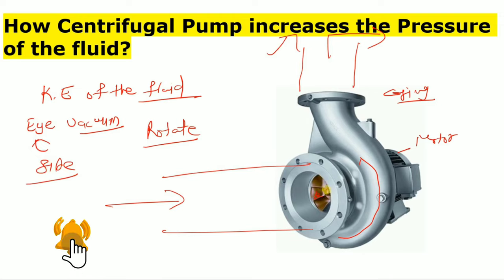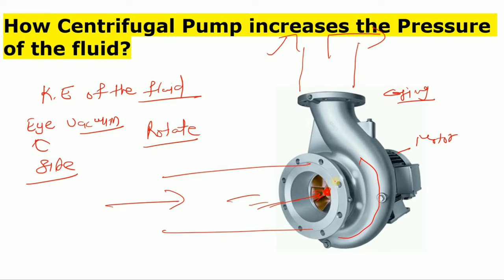At the eye side it creates a vacuum. The impeller is giving rotary motion to the pump, which increases the kinetic energy. All the liquid is going into the eye of the pump — from the eye of the pump the liquid is entering. As the impeller rotates, it provides rotary motion and kinetic energy to the fluid.